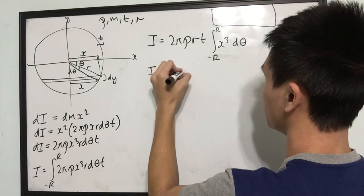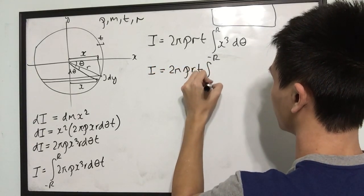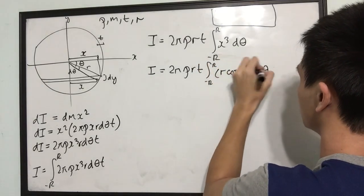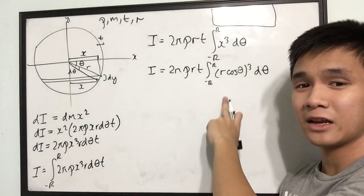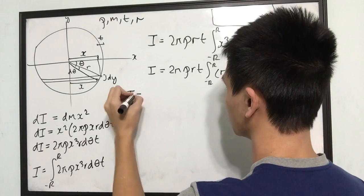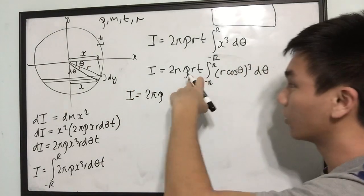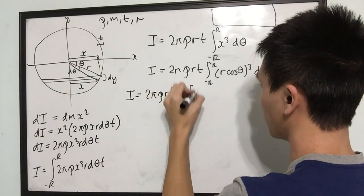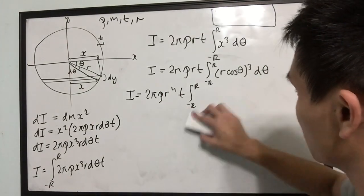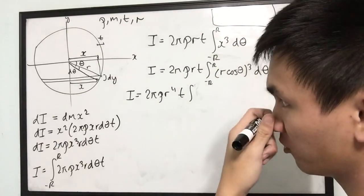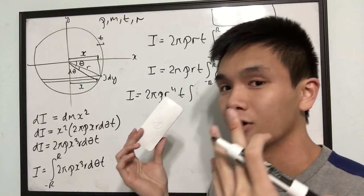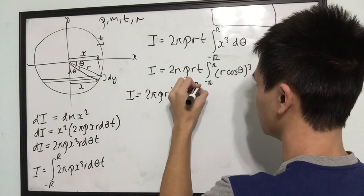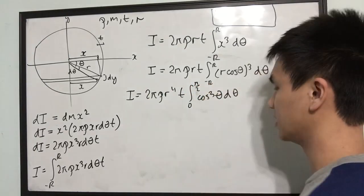So I is equal to 2π·rho·r·t · ∫ from negative r to r of (r·cosθ)³ dθ. Cubing and pulling r³ out of the integral: I = 2π·rho·r⁴·t · ∫ cos³θ dθ. Now we changed the variable of integration, so our integral goes from 0 to 2π of cos³θ dθ.